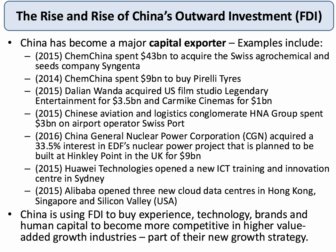Alibaba, under the leadership of Jack Ma, is spending millions of dollars opening three cloud data centres in Hong Kong, Singapore, and Silicon Valley. What you can see here is that China is trying to change its growth pattern — using some of its surplus dollars and funding FDI to buy experienced technology, well-established brands, and high-quality human capital. It's all part of their strategy to become more competitive in higher-value-added industries of the future, moving away from labour-intensive manufacturing towards higher-quality, premium-priced manufacturing and service industries.